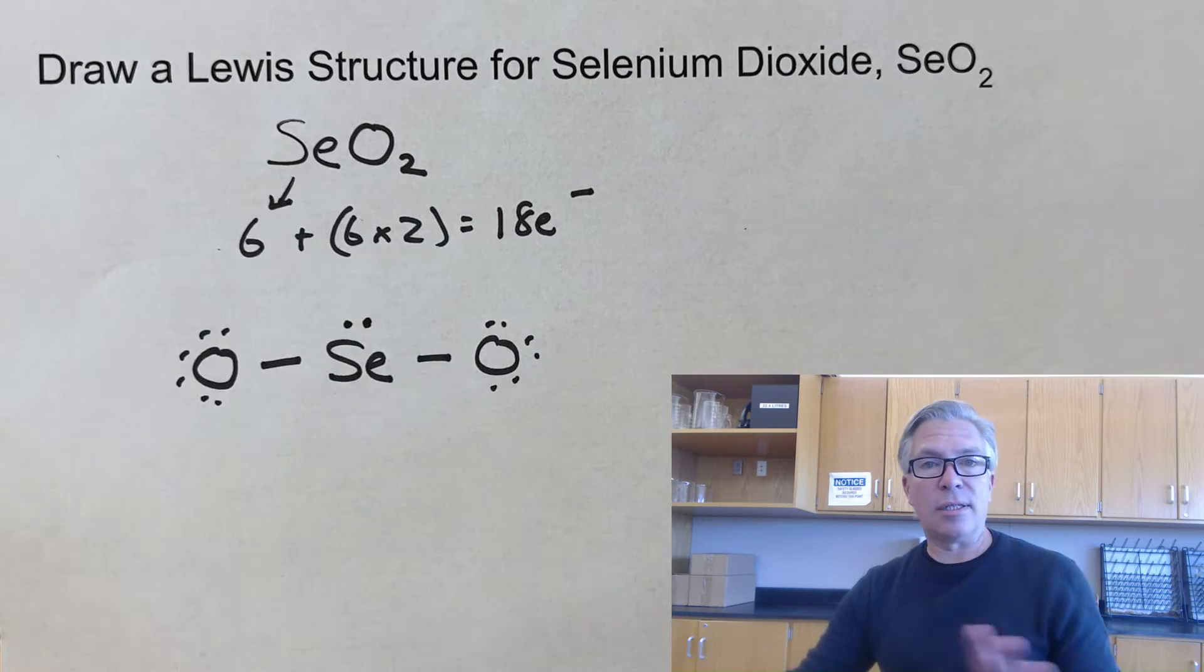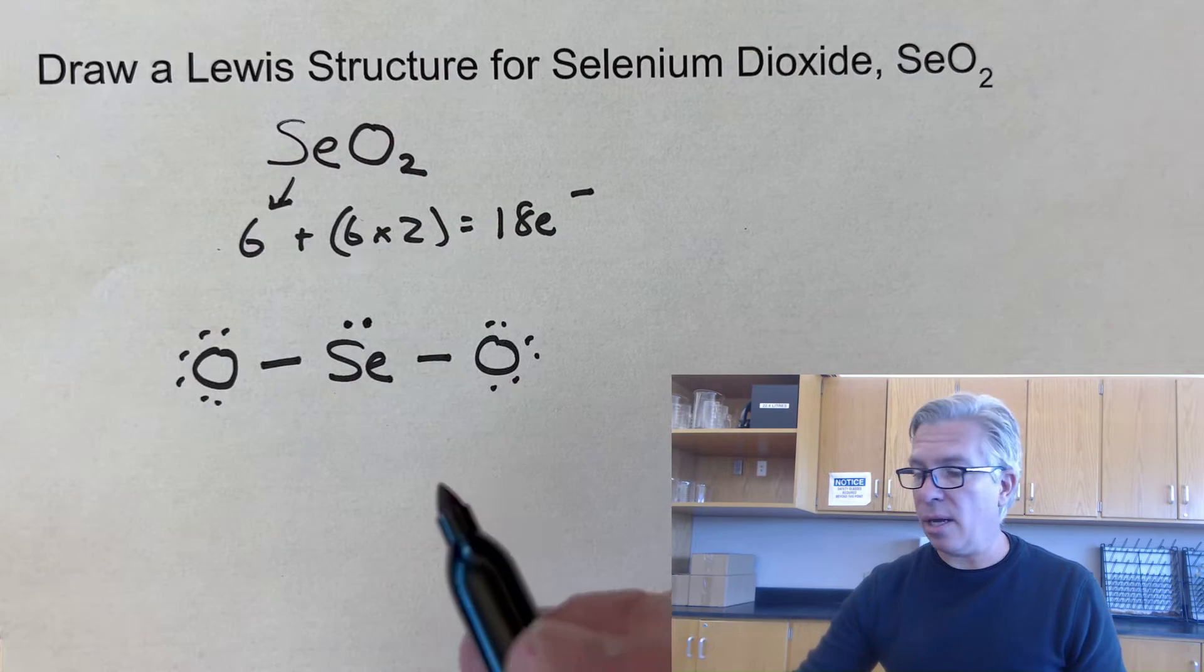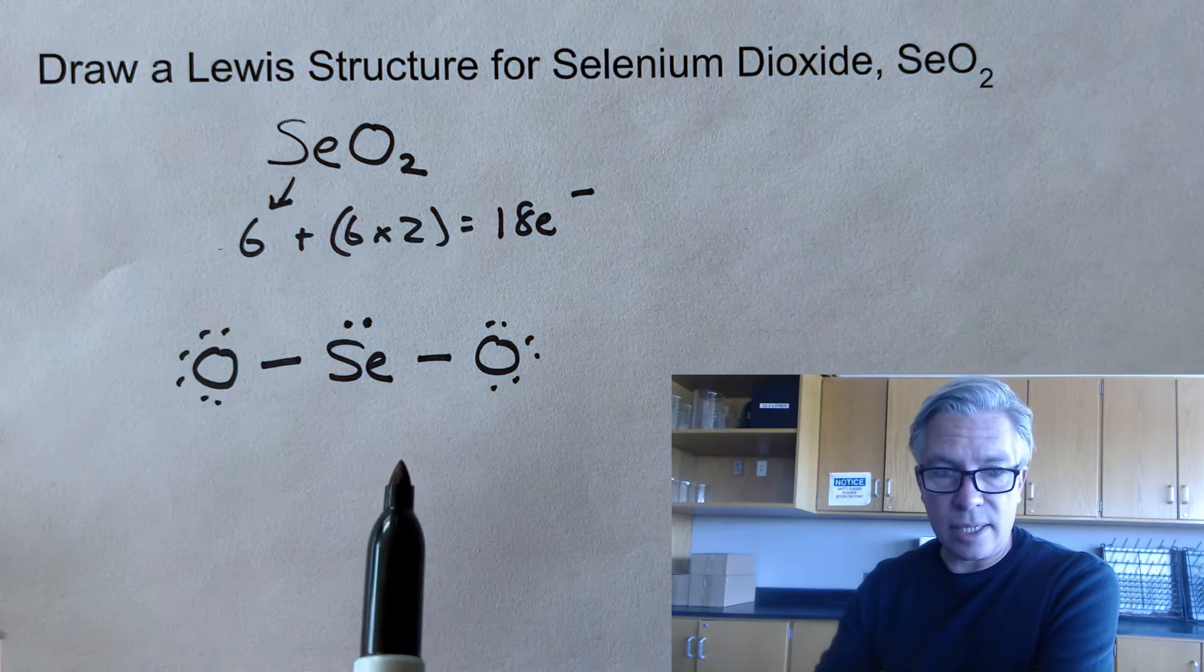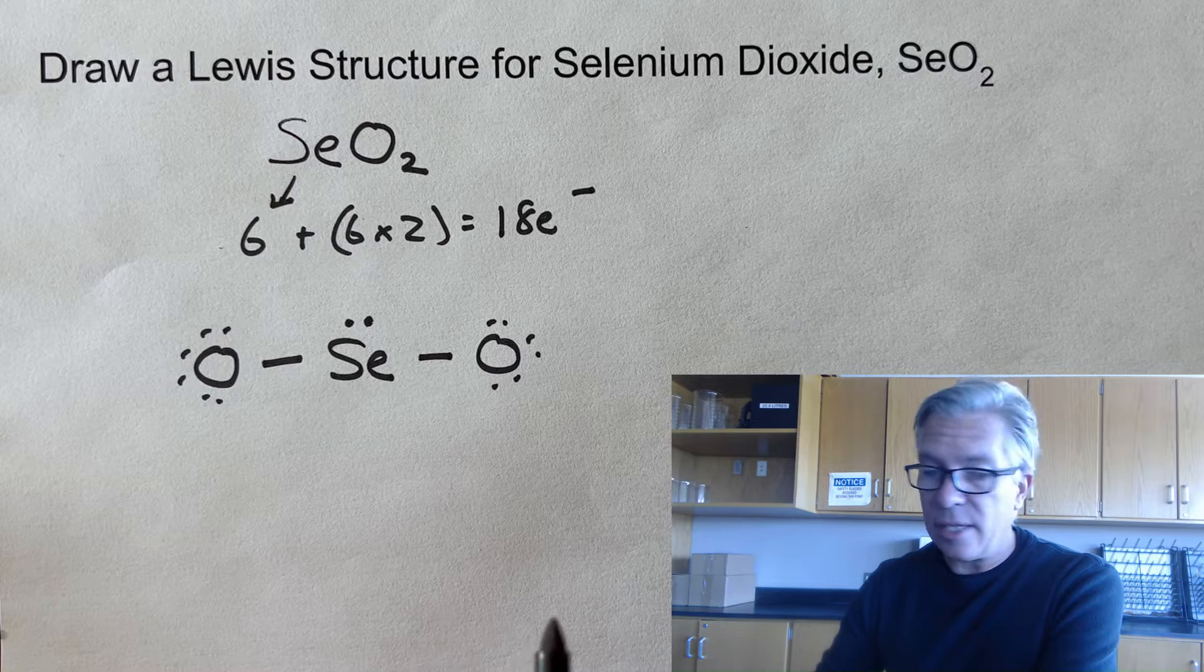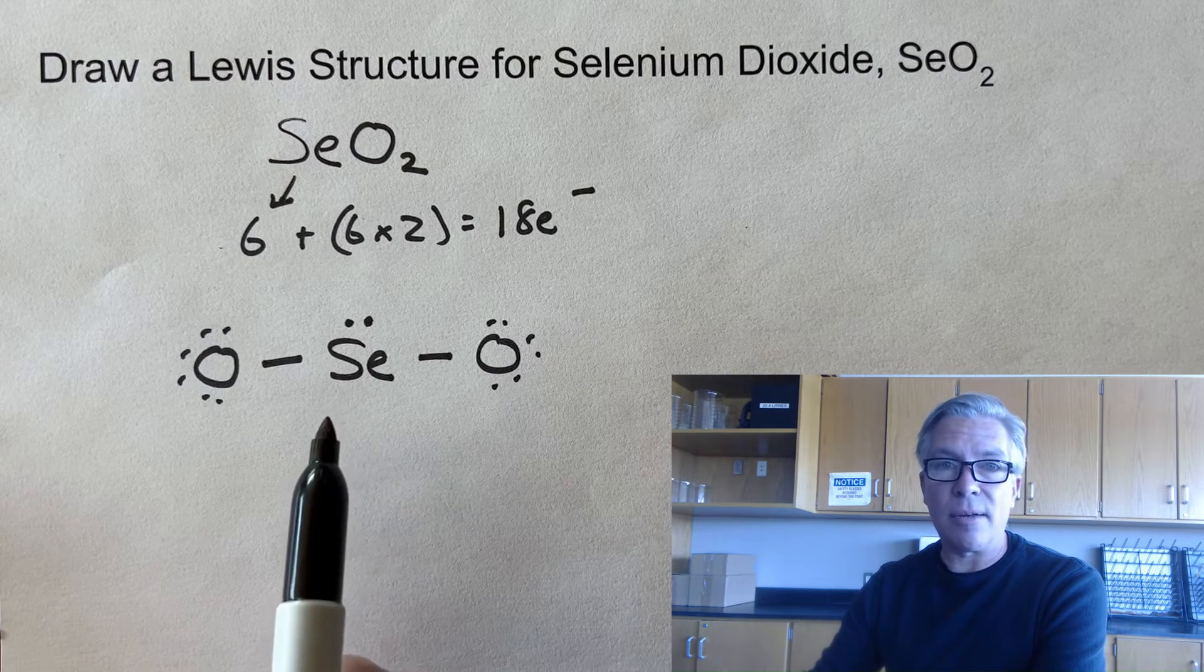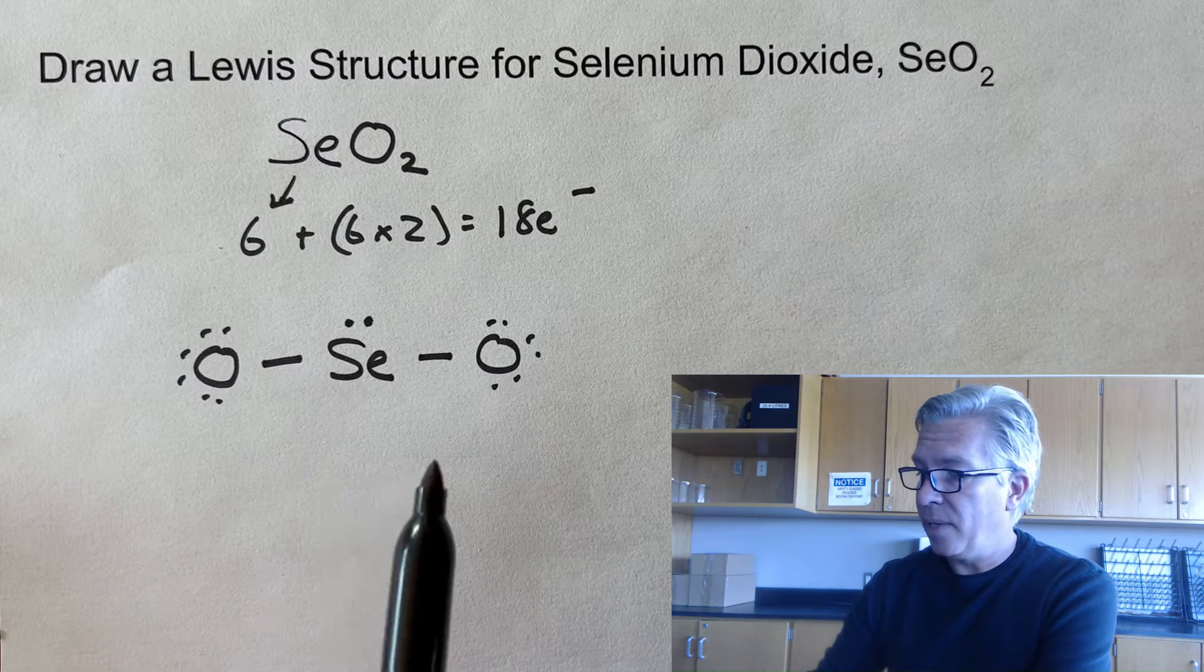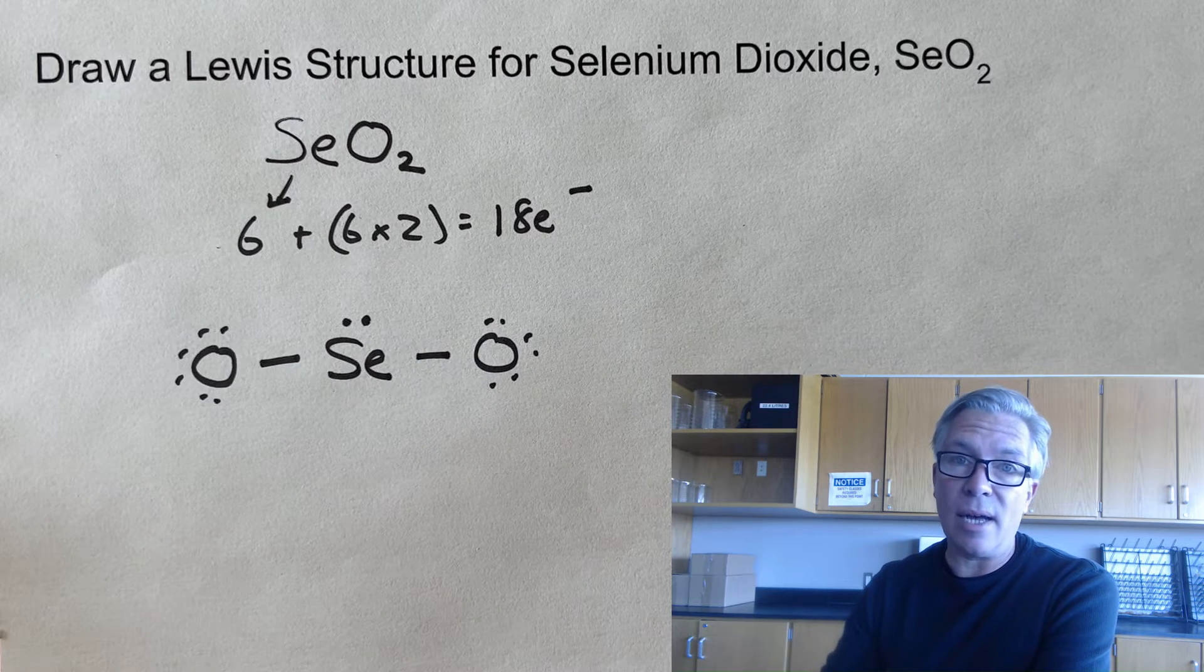Any remaining electrons, this is step 4, go on the central atom, even if doing so results in more than an octet. And I get this situation where I've used up all 18 electrons. And at this point, we have to sort of sit back and say to ourselves, OK, is that central atom happy? Is it satisfied? Does it have an octet or at least an octet? And in this case, no, it's not. It's got 2, 4, 6 electrons, but not 8.